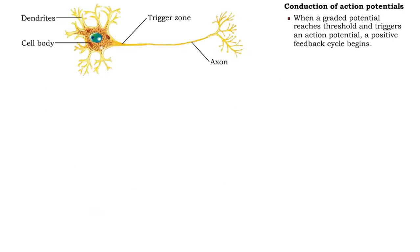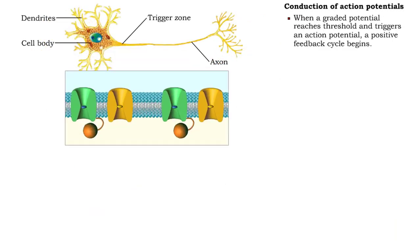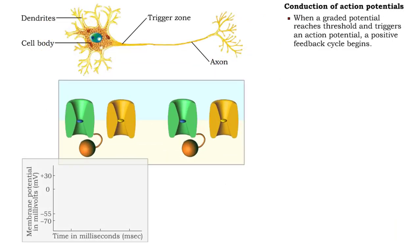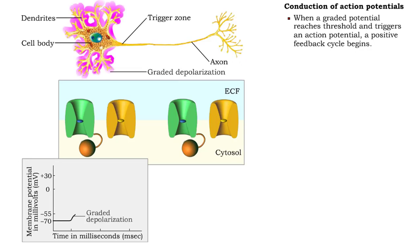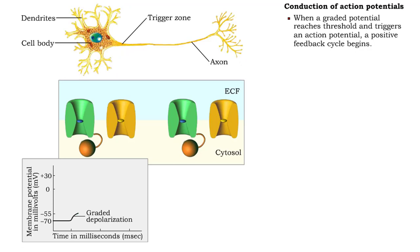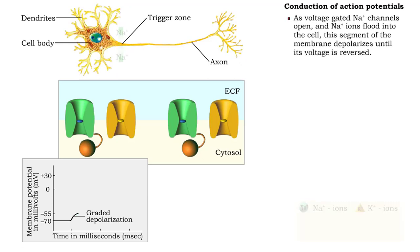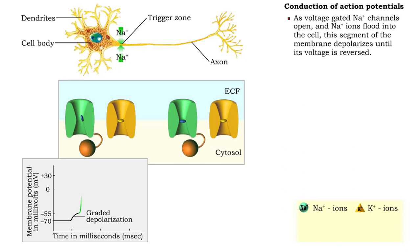A positive feedback cycle is set in motion when a graded potential reaches threshold and initiates the action potential at the trigger zone of the axon. Depolarization of the first segment of membrane progresses as the sodium gates continue to open and lasts until the charge is completely reversed.